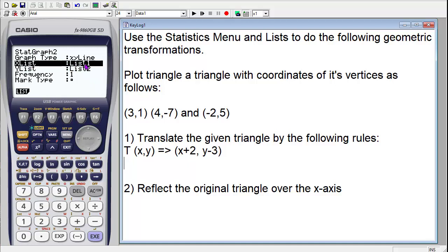So graph 2, my X list is actually coming from list 3. Notice I have to hit list here. And I can enter the number. So I want it to come from list 3, and it changes that.